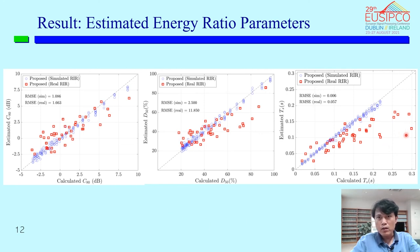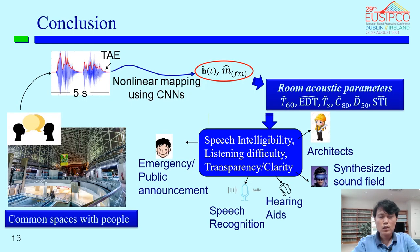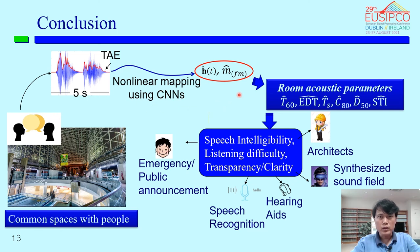Even though there are some outliers, we will consider those in the next study. To conclude: this study utilizes the concept of the MTF — specifically the modulation distortion of TAE across seven octave bands — and uses a CNN to map to the parameters of the Schroeder IR model. From this, we estimate five room acoustic parameters and the Speech Transmission Index. These estimated parameters can provide benefit for many areas of speech applications.